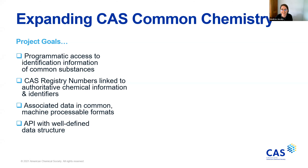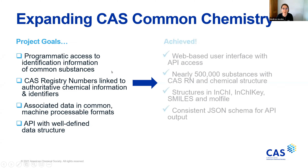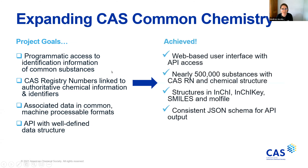The identification information of common substances, the ability to access CAS registry numbers linked to authoritative chemical information and their identifiers, access to associated data in common machine-processable formats, and an API with a well-defined data structure. I'm really happy to share that we were able to achieve these goals through the relaunch of CAS Common Chemistry.